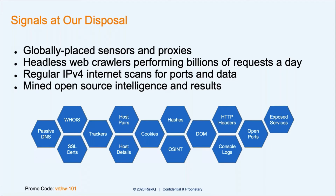These signals are the different data sets we're going to go through today: the passive DNS — information about what IP address responded to that domain for that particular date and time; the WHOIS record — who owns that record, who is it registered to; the certificate — the IP address and domain associated with a particular certificate number; the trackers — little bits of code that track user experience. Also, if you have trackers on your own website and somebody duplicates your website, they're probably duplicating your trackers.